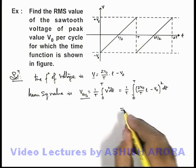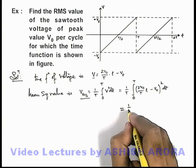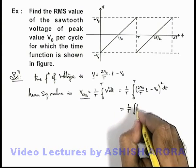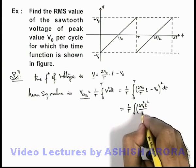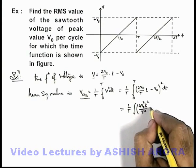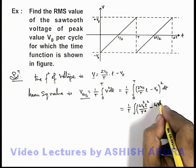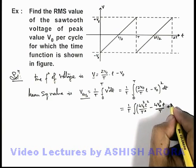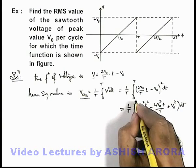If we square the function, this will give us (1/T) integration of 4V₀²t²/T² minus 4V₀²t/T plus V₀², dT, integrated from zero to T.